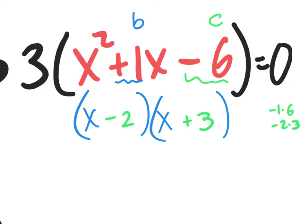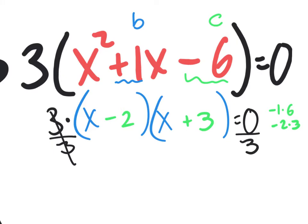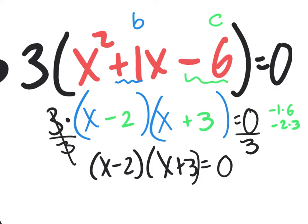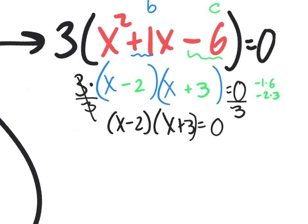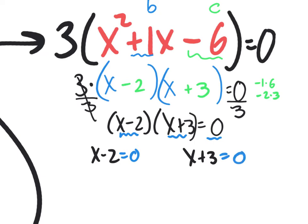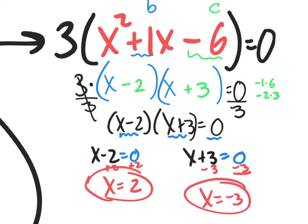So we're going to put negative 2 and positive 3 in there. Now, assuming it's an equation, you have 3 times that stuff equaling 0. You can divide by 3 — it cancels out, and 0 divided by 3 is still 0. So what you really have is x minus 2 times x plus 3 equals 0. With the zero product property, if something times something equals 0, then x minus 2 equals 0 or x plus 3 equals 0. Solving both, you get x equals 2 and x equals negative 3.